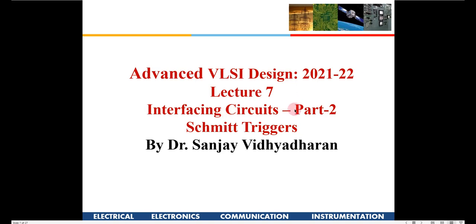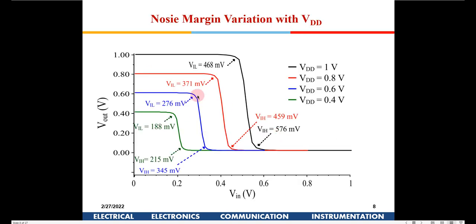In part 2 of this series of lectures on interface circuits, we will see how a Schmitt trigger is designed. These are simulation results — not from any textbook — for 45 nanometer technology devices.